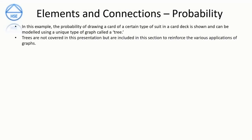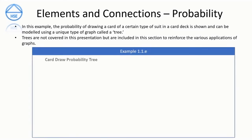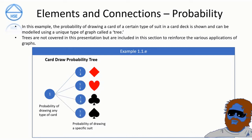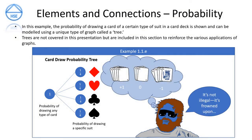Elements and connections — probability. The probability of drawing a card of a certain suit from a card deck is shown in Example 1.1.e. It can be modeled using a unique type of graph called a tree. Trees aren't covered in this presentation but are included to reinforce the various applications of graphs. In Example 1.1.e, the probability of drawing any type of card from a deck is 1. If we discount jokers, the probability of drawing a specific suit is broken down into quarters — a 25% chance of drawing a spade and a 25% chance of drawing any other suit.